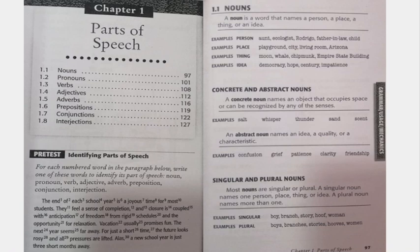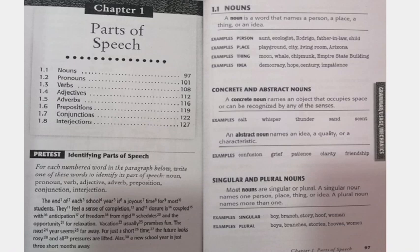Let's go with the first categorization: concrete and abstract nouns. A concrete noun names an object that occupies space or can be recognized by any of the senses. Our senses include sight, hearing, taste, touch, and smell. If we are able to sense a certain noun through any of our senses, that means it is considered a concrete noun.